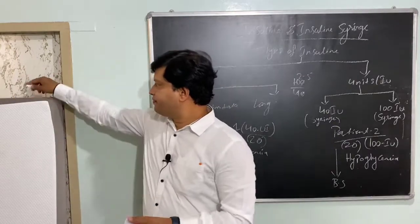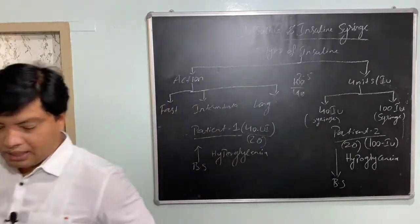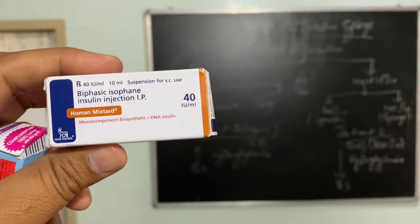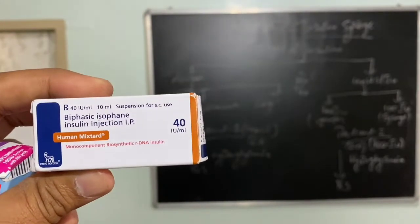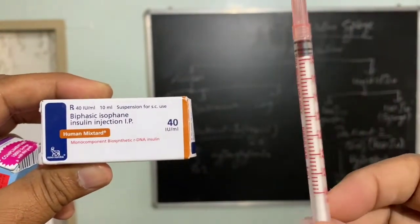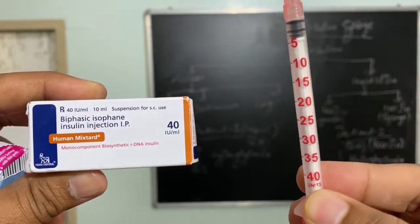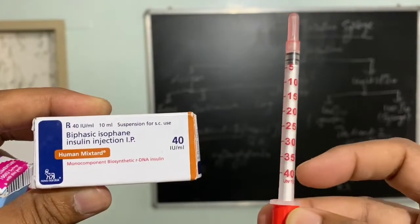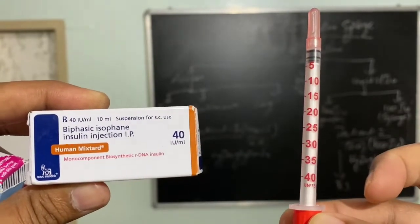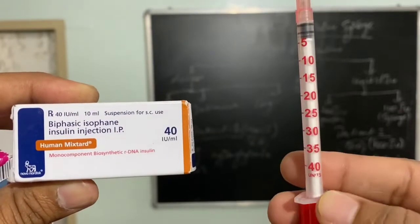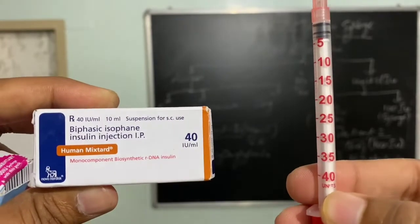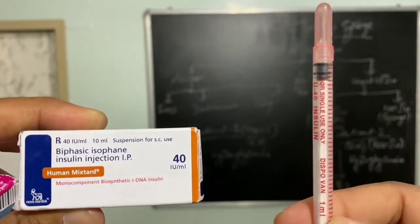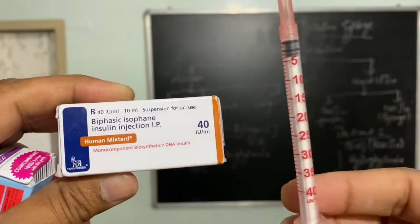This is the 40-unit insulin. For this 40-unit insulin, you need to use the 40-unit syringe — it is written '40 unit' and it is in red color. The maximum unit marking on the syringe is 40 only. Hence you can easily identify that 40-unit insulin should be used with the 40-unit syringe. The total volume of the syringe is 1 ml and the units are 40.